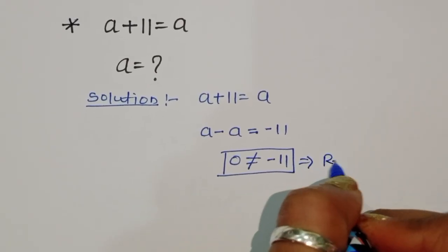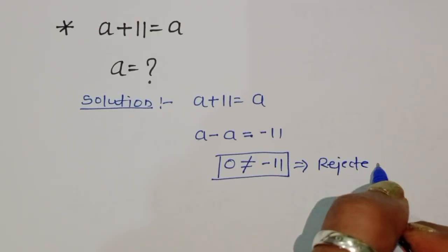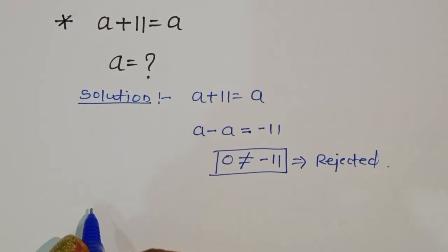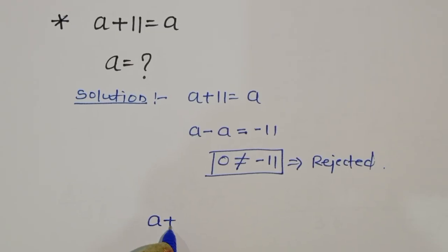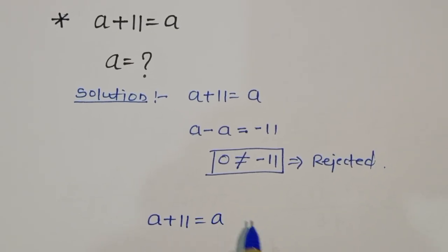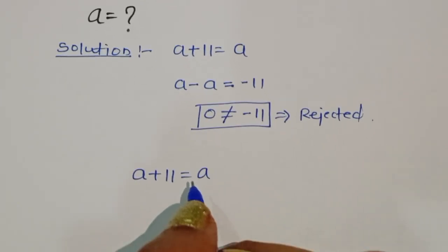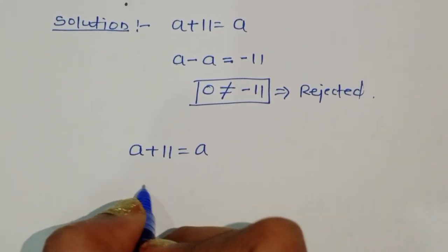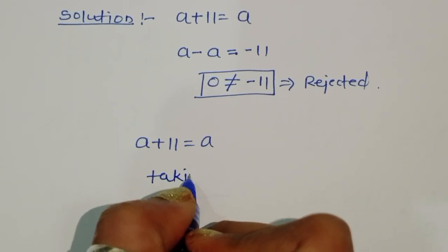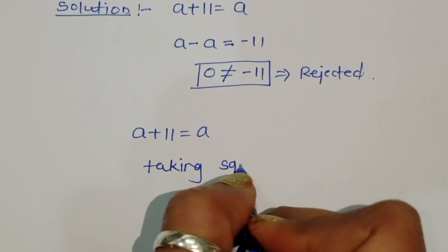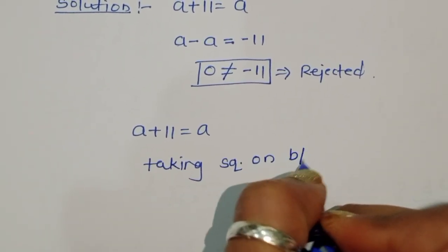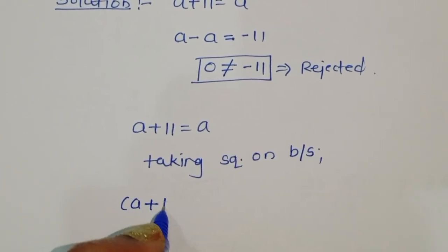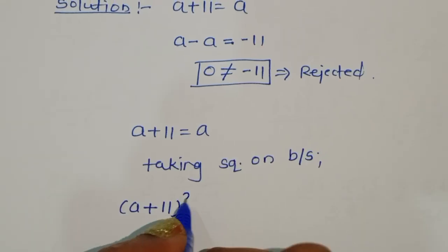We have to solve this using another method. Using the equation a+11 = a, we can take the square on both sides. So taking square on both sides, we will get (a+11)² = a².